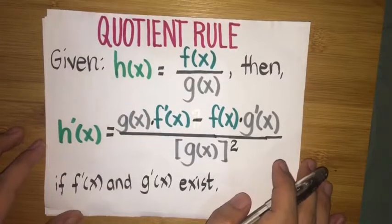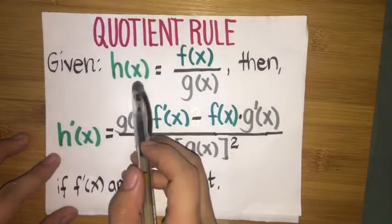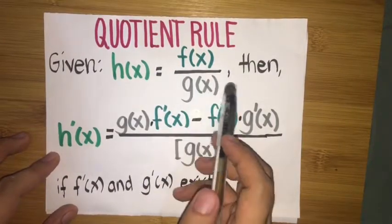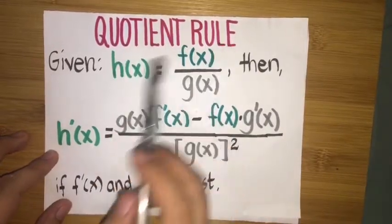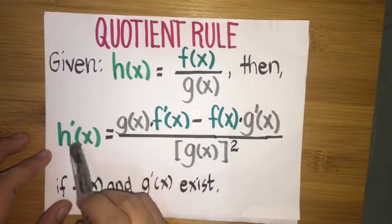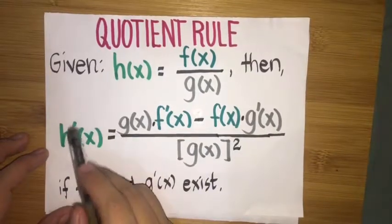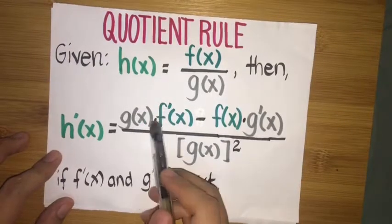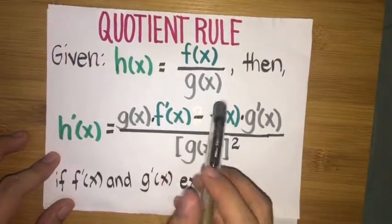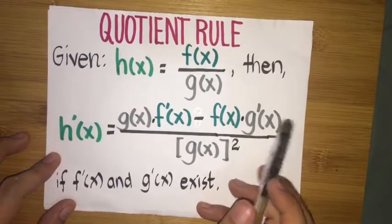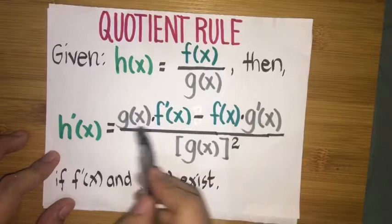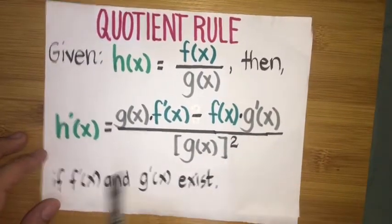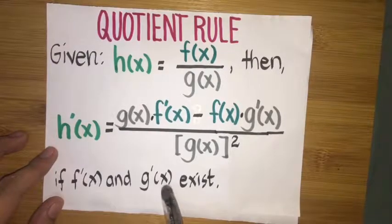Let's say we are given h of x equals f of x divided by g of x. Then, using the quotient rule, we can find the derivative of h of x, which is h prime of x, equal to g of x times f prime of x minus f of x times g prime of x, all over the square of g of x, if f prime of x and g prime of x exist.